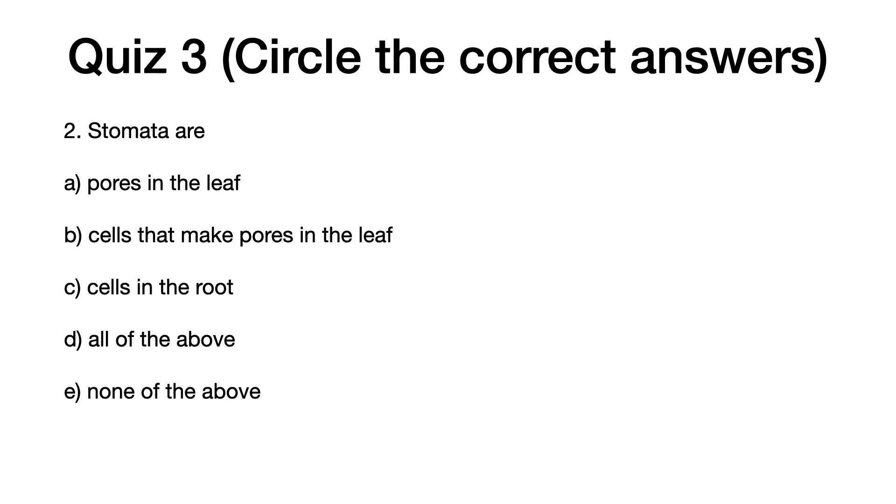Two, stomata are: A, pores in the leaf. B, cells that make pores in the leaf. C, cells in the root. D, all of the above. E, none of the above.